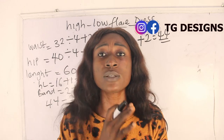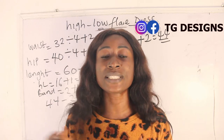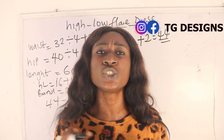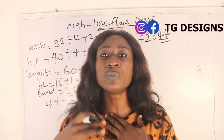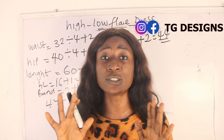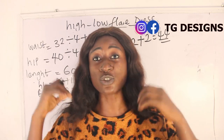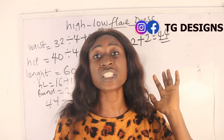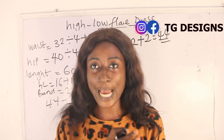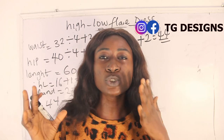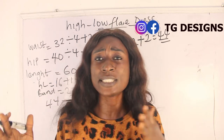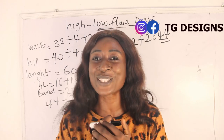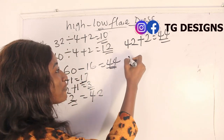This 44 inches is going to serve as the back block, since we want a high-low flay dress where the back block is longer than the front block. Go ahead and determine how many inches you want for your front block. You can stop somewhere around 17, 18, or 20 inches — it depends on you. For me, I'm going with 17 inches for my front block.